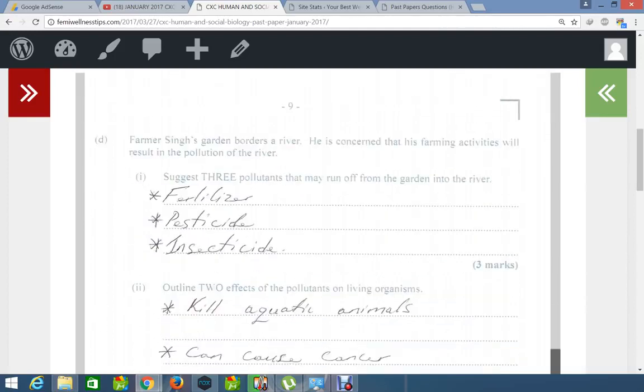Of course, let's move on. Now, this farmer again, his garden borders a river. He is concerned that his farming activities will result in the pollution of the water. So there's three pollutants that may run off from the garden into the river. The first one is fertilizer, of course. And as you can see there's an error in the spelling, so of course you can correct that. So fertilizer, then we have pesticides and insecticides. So these are the three chemicals that might run off from this farm.